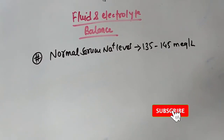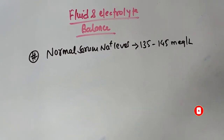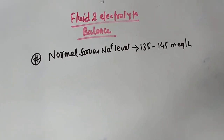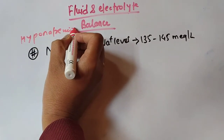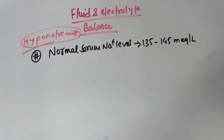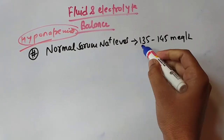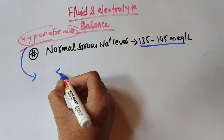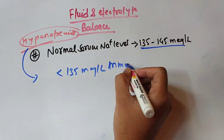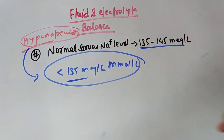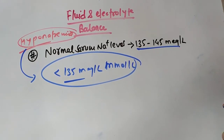Hello everyone, welcome to my channel. Today we will be talking about a very important topic: hyponatremia, a subtopic of fluid and electrolyte balance. The normal serum level of sodium is 135 to 145 milliequivalents per liter. Hyponatremia is defined as a serum sodium level that falls below 135 milliequivalents per liter.